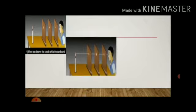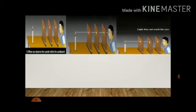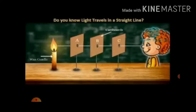Place a candle in front of them and try to see the light from the other side of the cardboards. You can see the flame of the candle because all the holes are in the same line. Now change the position of any one of the cardboards and try to see the flame. In this case, you will not be able to see the flame of the candle.